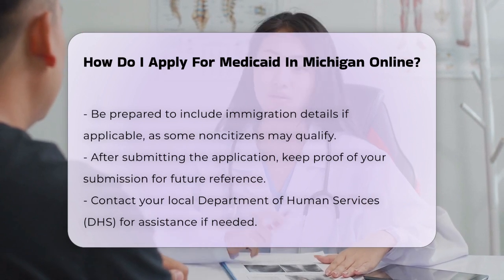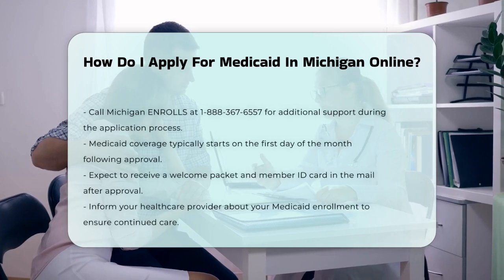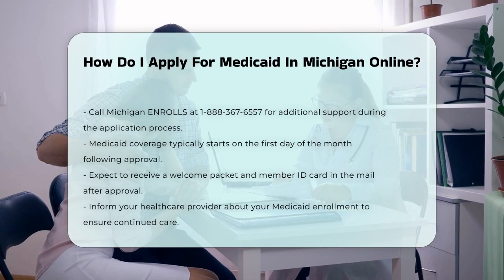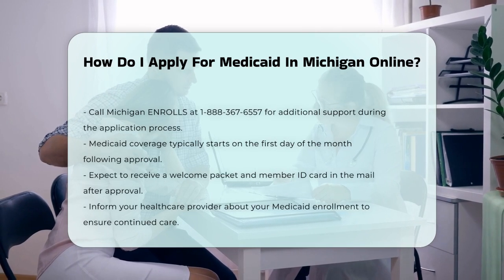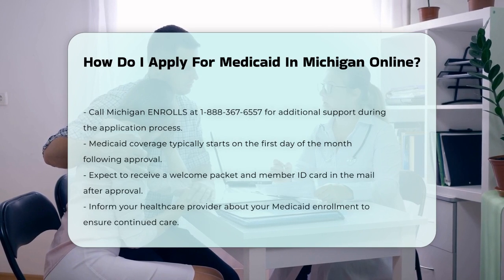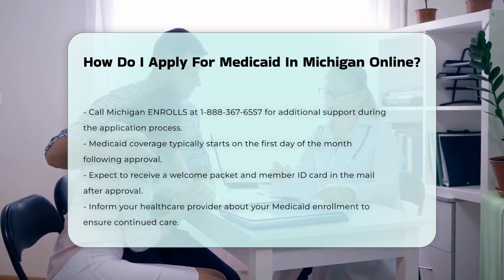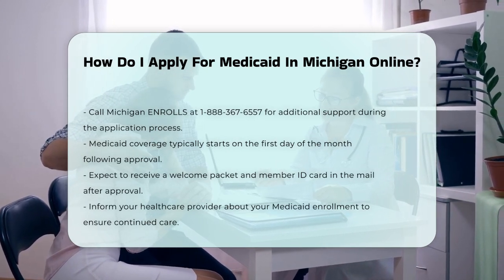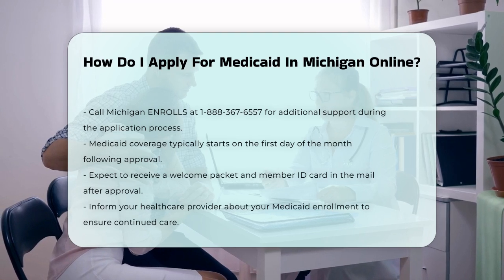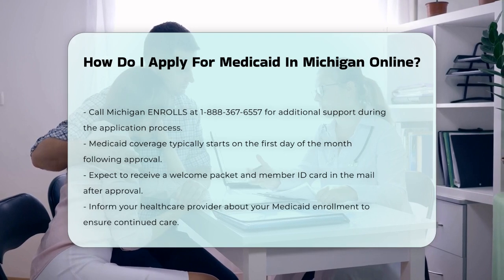You can also call Michigan Enrolls at 1-888-367-6557 for additional help. After your application is reviewed and approved, your Medicaid coverage will typically start on the first day of the month following your approval. You'll receive a welcome packet and member ID card in the mail, and you can start using your Medicaid benefits right away.